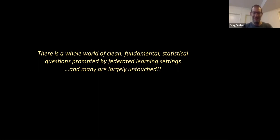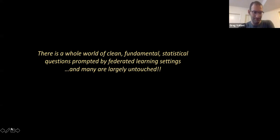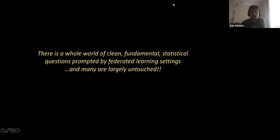I went through this last section very quickly, but I wanted to get the framework of worst-case expected error out there. For all three of these clean statistical questions, these are distillations of different aspects of the challenges of federated learning. There really seems to be a whole world of very clean, fundamental statistical questions that are largely untouched, so I think there's a lot more to be done. For early-stage PhD students, this is very fertile territory. Thank you.